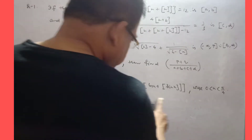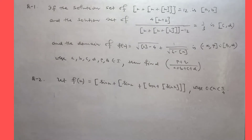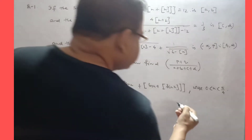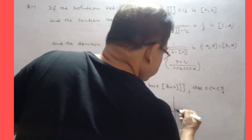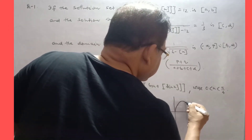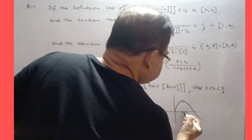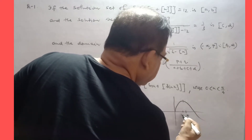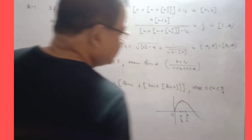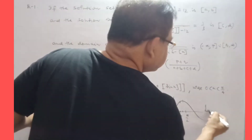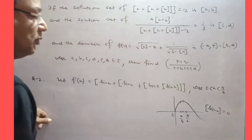Now let X = A — that is the greatest integer function. Looking at the sine X graph from 0 to π/4 — the value of sine X in [0, π/4] is between 0 and less than 1, so the greatest integer of sin X in that interval is 0.